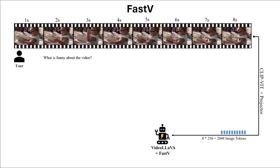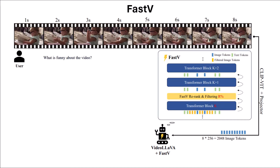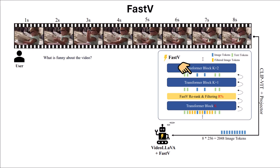The module works simply: we have a stack of transformer layers, and we pick one — say transformer block at layer K — and add a FastV re-rank and filtering module which filters out r% of the image tokens. The yellow tokens shown are filtered out, so from the next layer onward we don't have those tokens, resulting in less computation and a faster model at inference time.